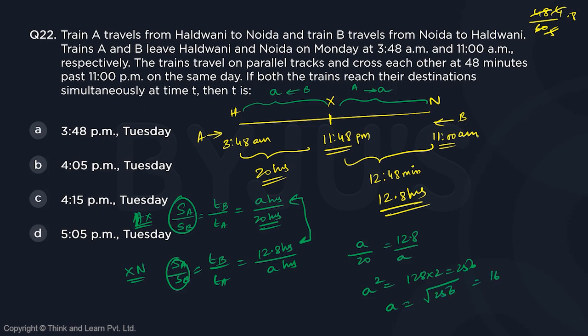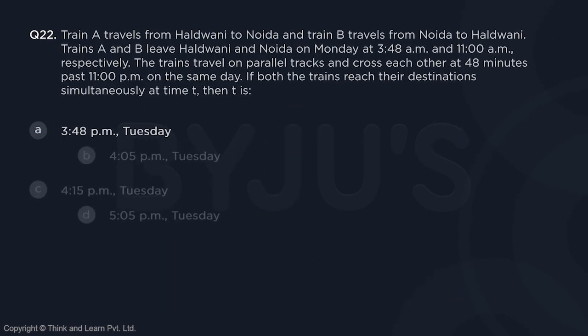So A is 16 hours. Adding 16 hours to the meeting time of 11:48 p.m.: adding 12 hours gives 11:48 a.m., then another 4 hours gives 3:48 p.m. So the answer is 3:48 p.m. the next day — Tuesday. Option A is the correct answer.